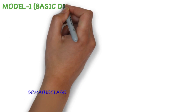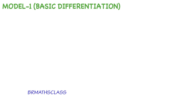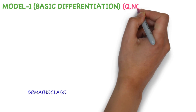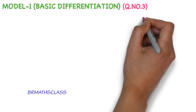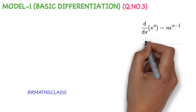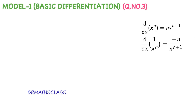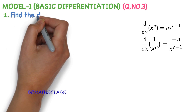Basic differentiation. In this module, we are learning how to apply the formulas. In question number 1, we learn how to apply the formula d by dx of x power n equals to n into x power n minus 1. In question number 2, we learn how to apply d by dx of 1 by x power n equals to minus n divided by x power n plus 1. Now let's start this class.